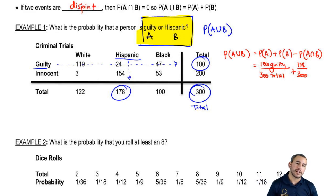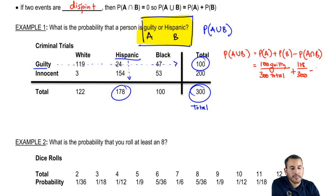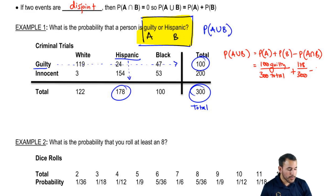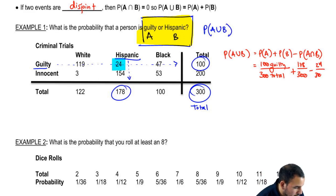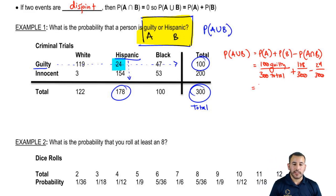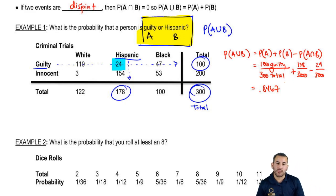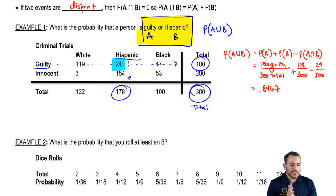The probability of someone being Hispanic and guilty is the intersection of both events — where both happen simultaneously. Looking at the table, there are 24 who were Hispanic and guilty. So we subtract 24 over 300. Once we calculate all of this, we end up getting 0.8467 — basically around an 85% chance that someone is going to be guilty or Hispanic. That's pretty high. That's it for the first example.